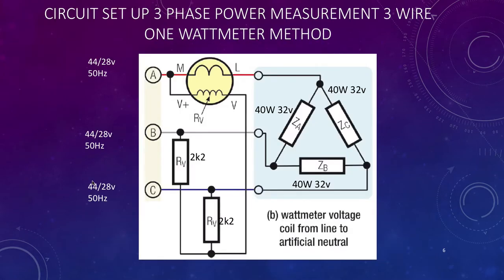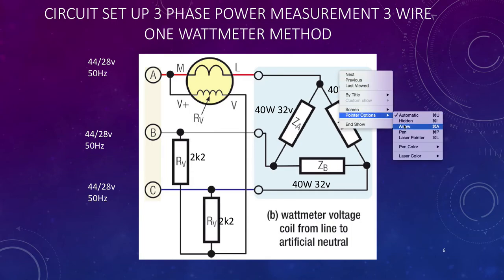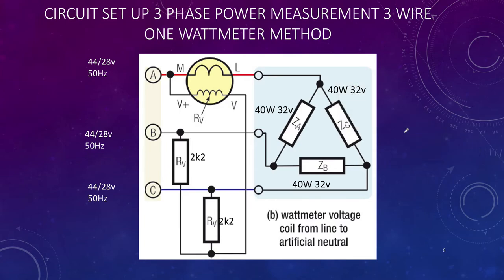Next we are looking at the circuit setup for a three phase power measure three wire one wattmeter method. So here we have to get a little bit tricky because there is no neutral, we have got to invent one. So let me show you how we do that.